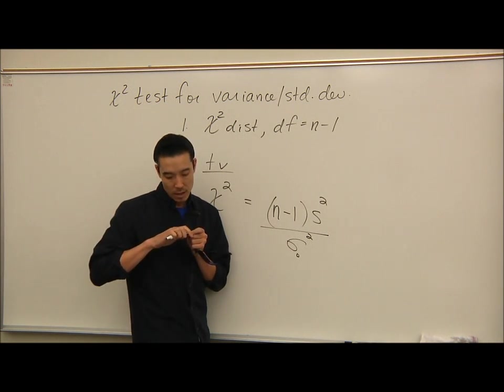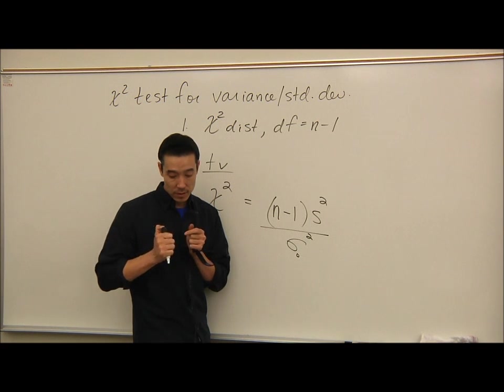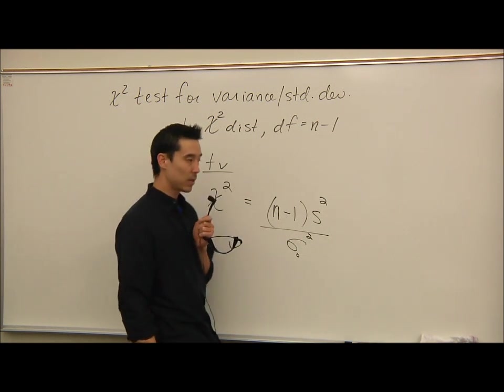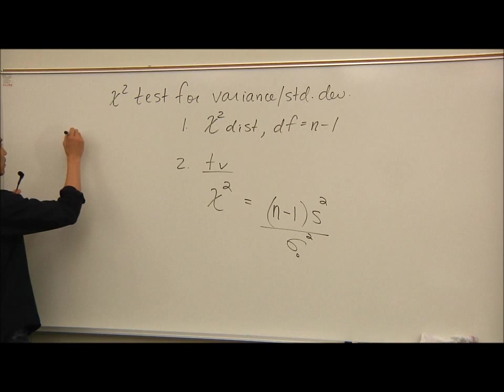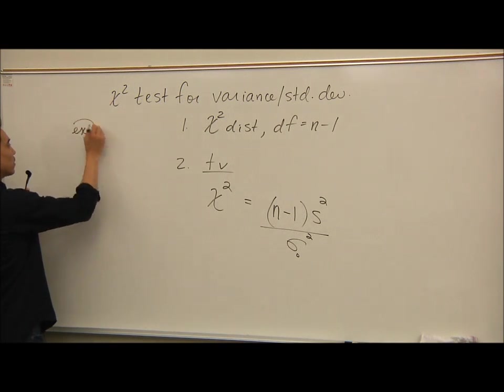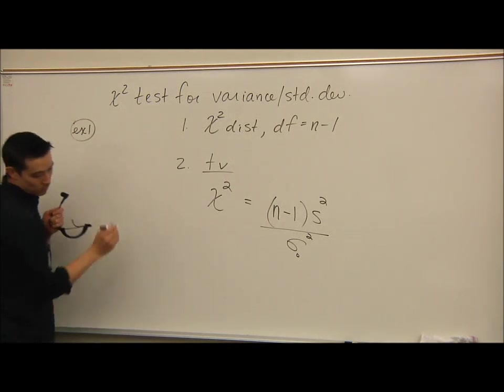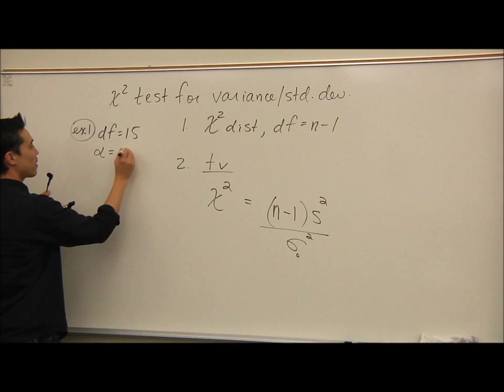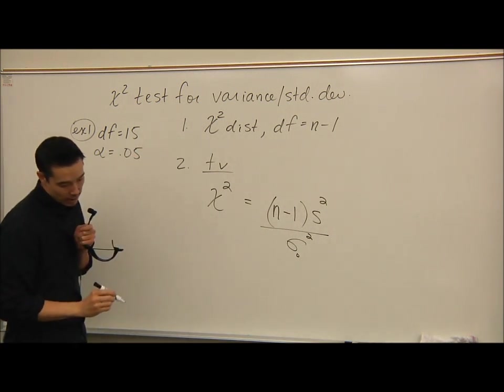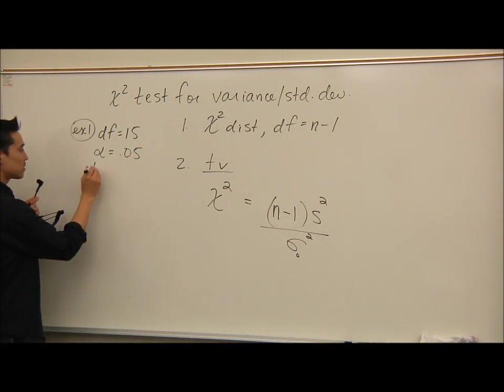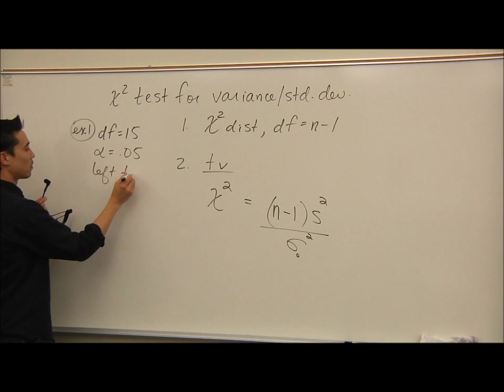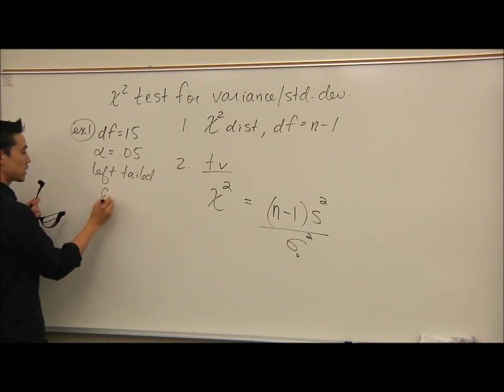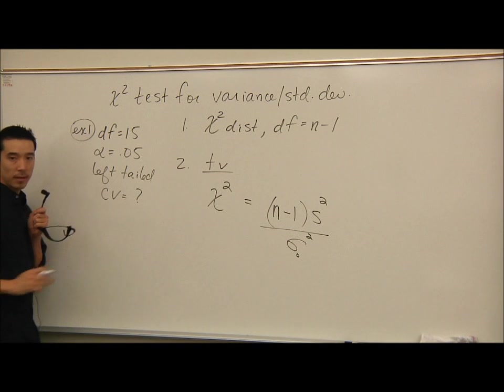So let's do example one here. Find the chi-squared critical value for 15 degrees of freedom, alpha's 0.05, and left-tailed tests. All right, here we go. Example one. We have the degrees of freedom is 15. We have alpha's 0.05. We have left-tailed tests. And I just want you to tell me what the critical value is.